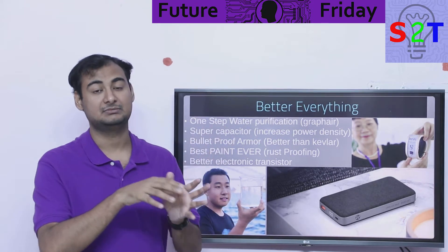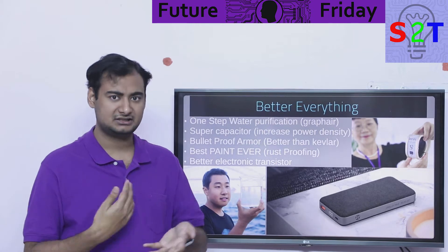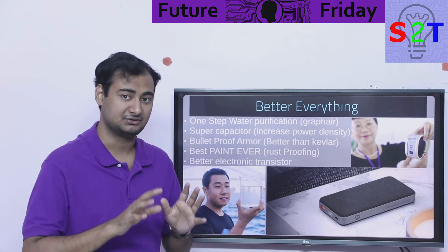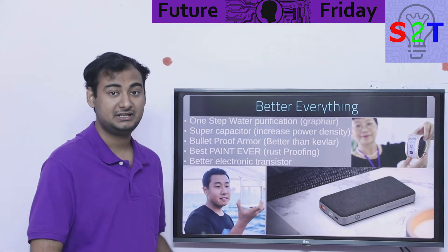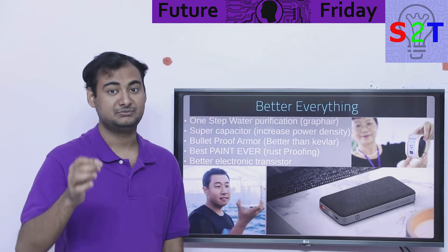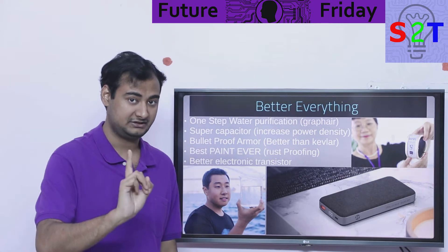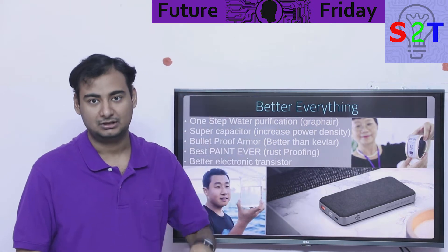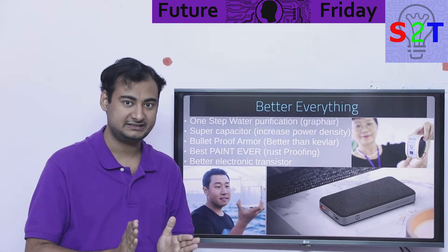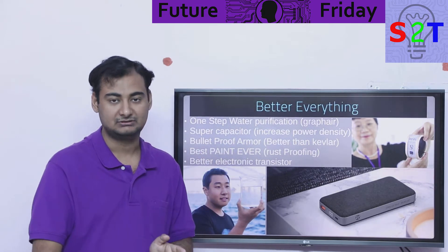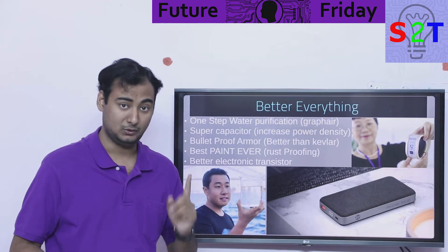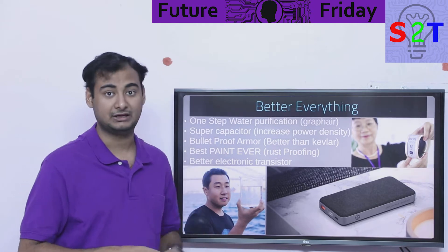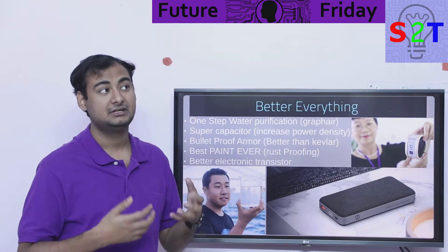RO has a problem: viruses can get through, so RO is always coupled with UV light and other sterilization steps. This graphene filter takes seawater and in a one-step process makes it 100% drinkable — just pump the water through the filter and that's it. No pre-ozonation, no aeration, no extra steps — one step. That is amazingly mind-boggling.